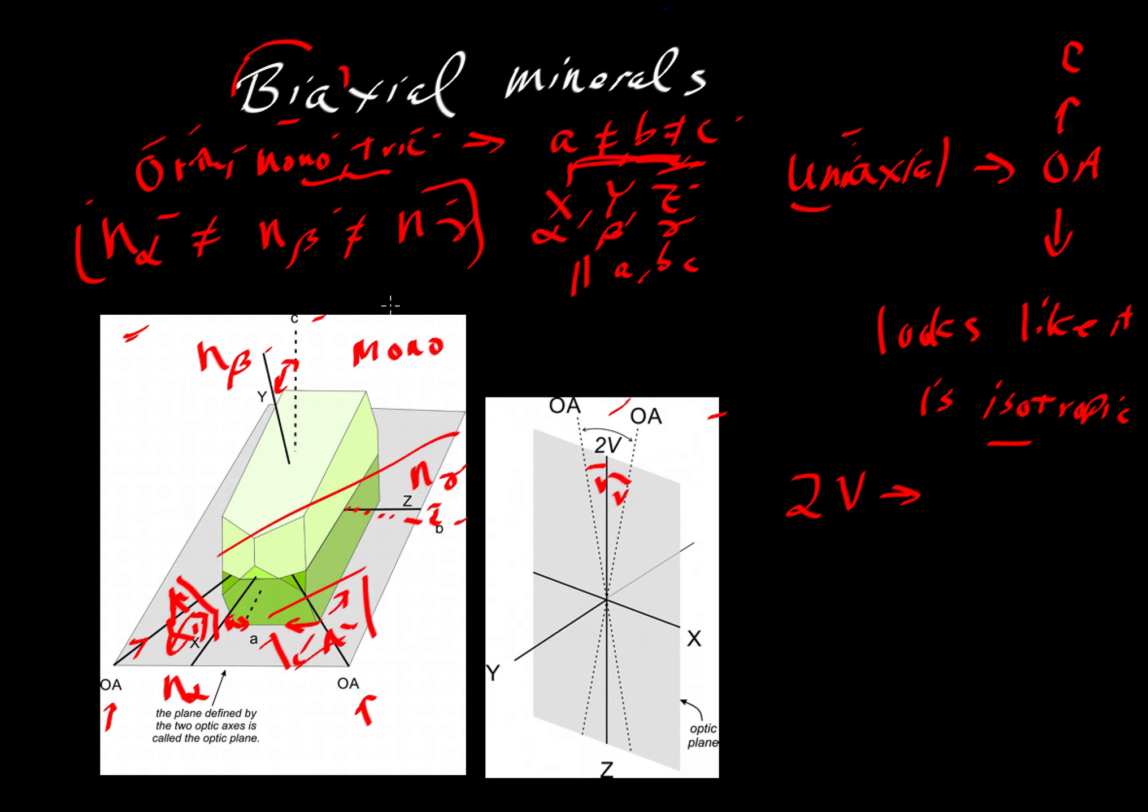All biaxial minerals will not only have a value for delta. Remember, delta is our birefringence, and we can take the maximum and minimum values, and those will usually be gamma and alpha. We'll just take the absolute value. It doesn't matter which one is larger. Beta will usually be the intermediate fellow. So this will be our birefringence, just as we saw for the case of uniaxial minerals.